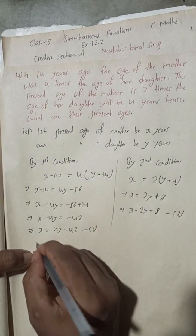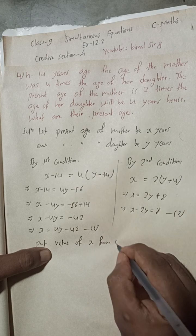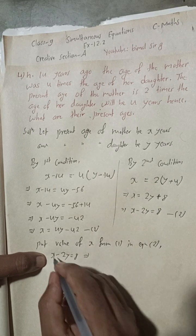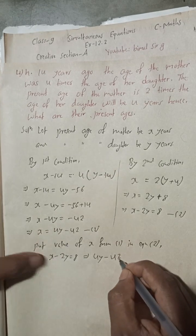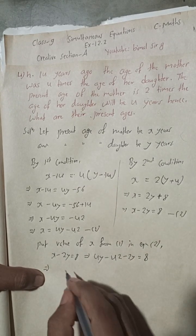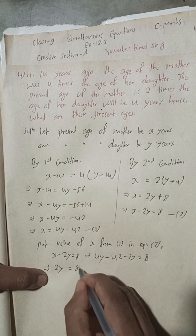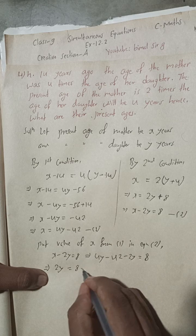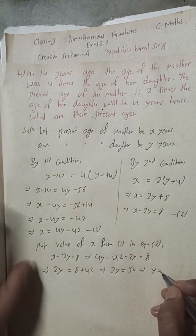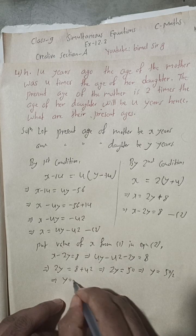Now put the value of X from equation 1 into equation 2. So X minus 2Y = 8 becomes: (4Y minus 42) minus 2Y = 8. This implies 4Y minus 2Y = 8 plus 42, so 2Y = 50. Therefore Y = 25.